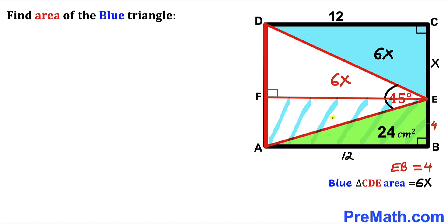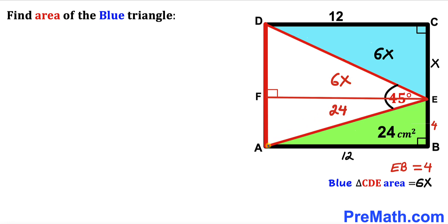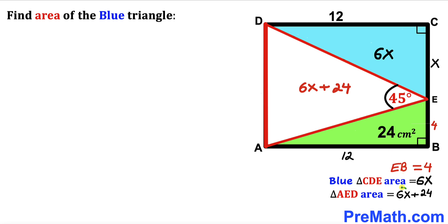Now focusing on rectangle ABEF with its main diagonal AE, this diagonal also divides that rectangle into two equal areas. Since the area of the green triangle ABE is 24 cm², the other half — the white sub-triangle in ABEF — is also 24 cm². Therefore, the total area of white triangle AED is 6X + 24.